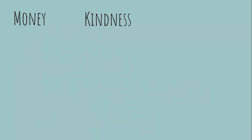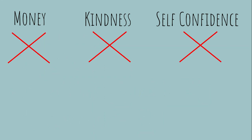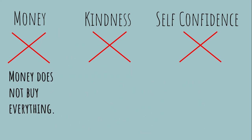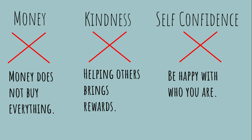So looking at these words — money, kindness, self-confidence — would you call those themes? No. Those are topics, those are subjects. And not only that, themes have to be written in complete sentences. They are not one word or two word answers. You always have to write them in a sentence. So an example of a money theme would be: money does not buy everything. That would be a theme. Helping others bring rewards — that would be a theme. Be happy with who you are — those are themes. But money, kindness, self-confidence — those are not. Those are topics.